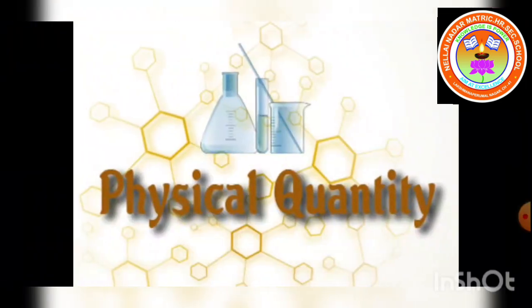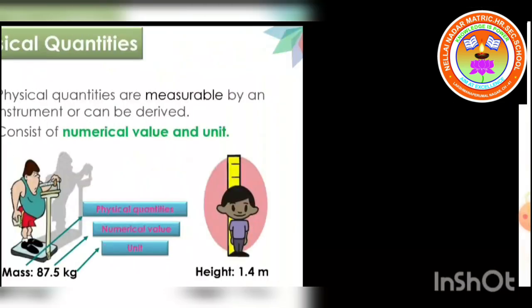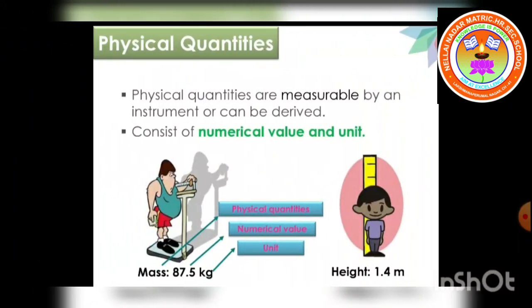Physical quantities are measurable by an instrument or can be derived. It consists of a numerical value and unit. Look at the picture here students. Numerical value: in case of mass, 87.5 is the numerical value, kg is the unit of mass. In case of height, 1.4 is the numerical value, and meter is the unit of height.